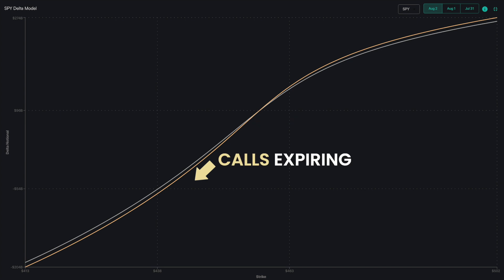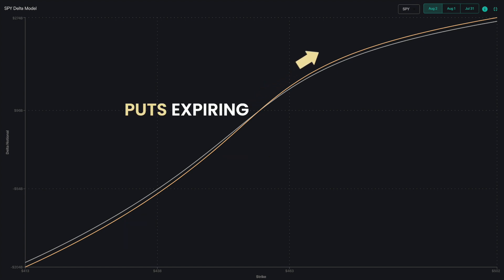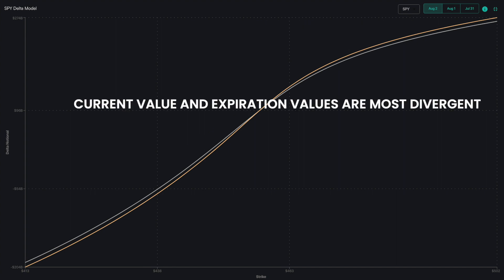Calls expiring can lead to a situation where pressures then leave the market lower. Alternatively, puts expiring could lead to an upswing for the market. It's important to look at times when the current value and expiration values are most divergent.